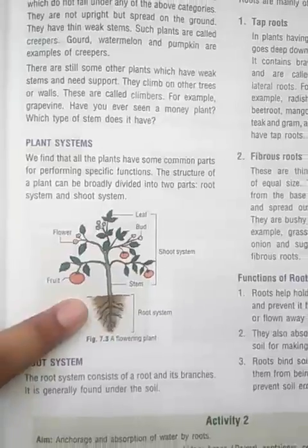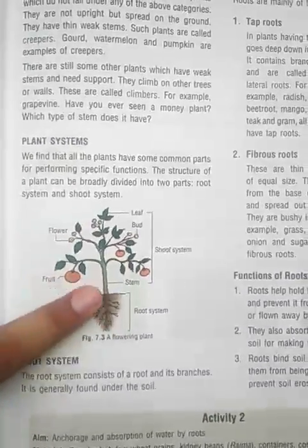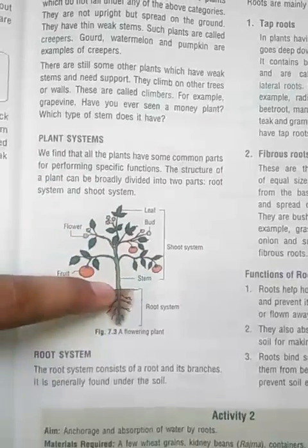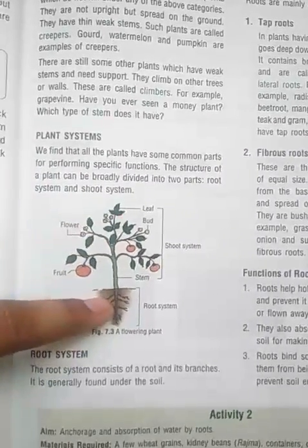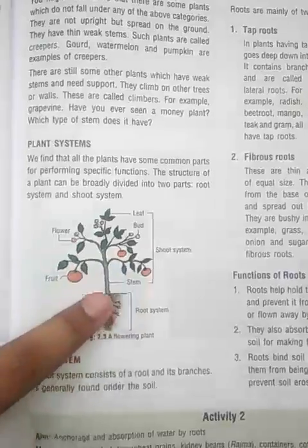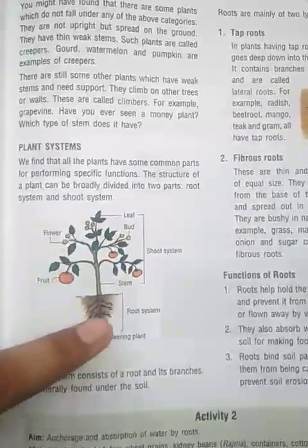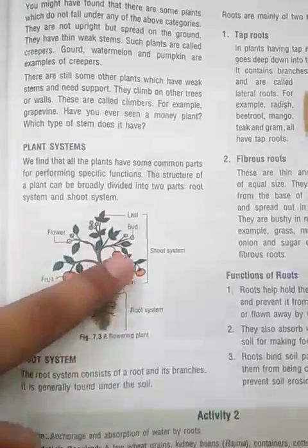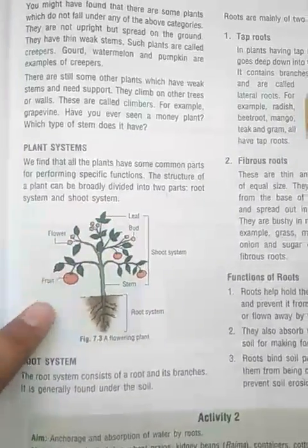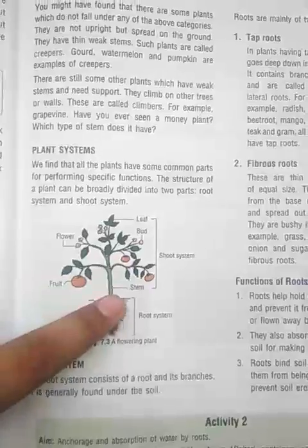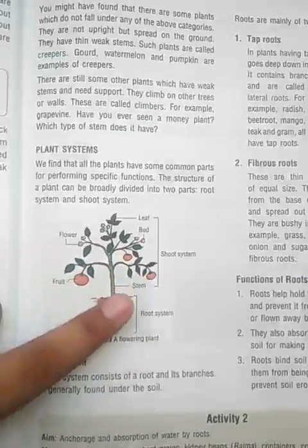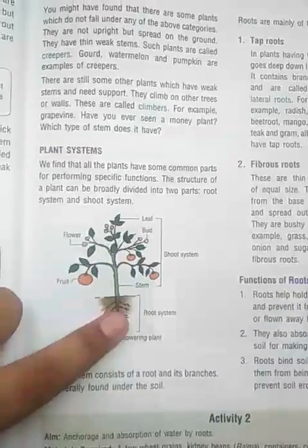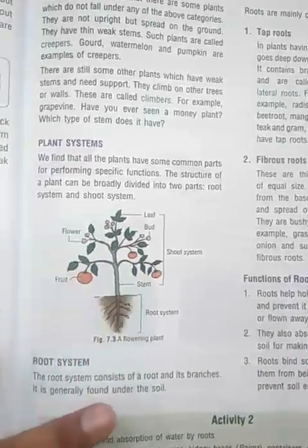When you look at a plant, the lower part in the soil is known as the root system, and the upper part above the soil is known as the shoot system. The shoot part includes the stem, branches, leaves, flowers, and fruits. The lower part embedded in the soil has the primary roots, secondary roots, and tertiary roots.